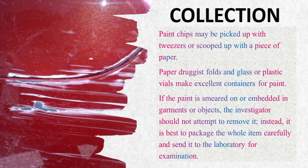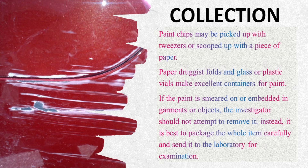Instead, it is best to package the whole item carefully and send it to the laboratory for examination. When a transfer of paint occurs in hit-and-run situations, such as to the clothing of a pedestrian victim, uncontaminated standard or reference paint must always be collected from the undamaged area of the vehicle for comparison in the laboratory. It is particularly important that collected paint be close to the area of the car that was suspected of being in contact with the victim. Standard or reference samples are always removed so as to include all the paint layers down to the bare metal.